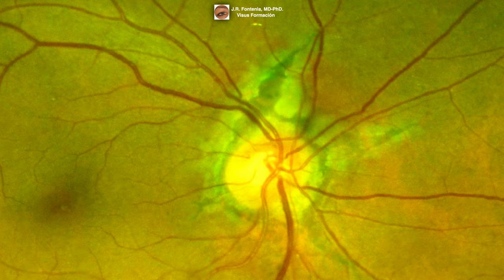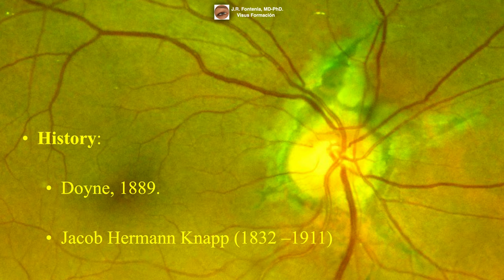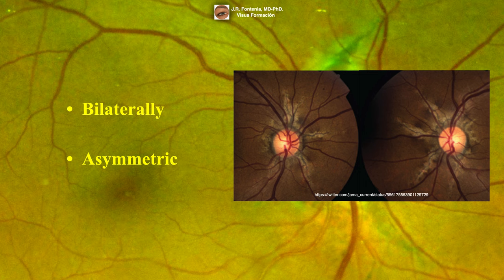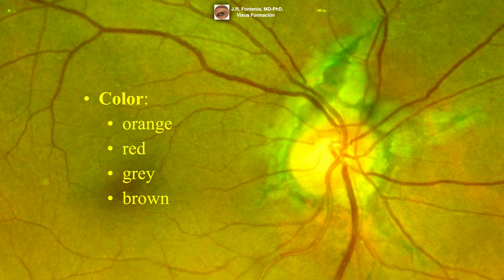Angioid streaks were first described in 1889 by Doyne, but the term 'angioid streaks' was first used by the German-American ophthalmologist Jacob Hermann Knapp in 1892, so they are also known as Knapp streaks. They occur bilaterally but asymmetrically, and are orange, red, gray, or brown in color.